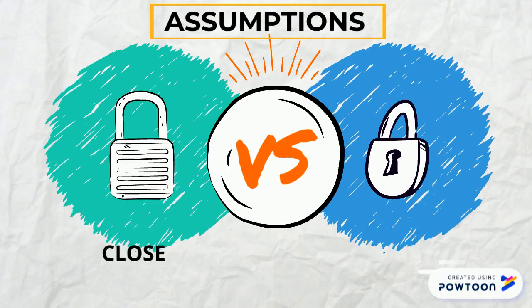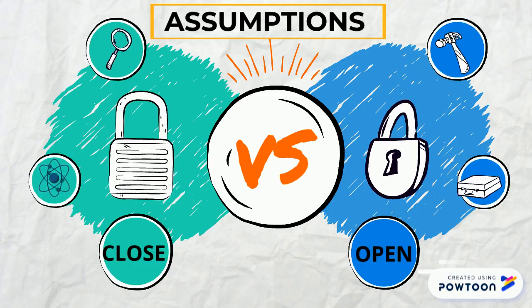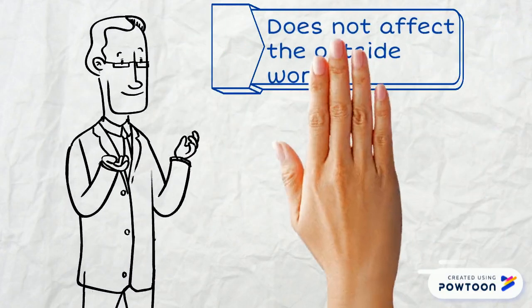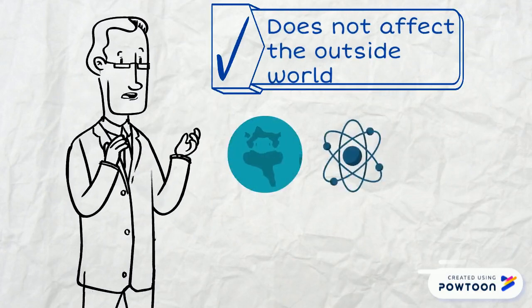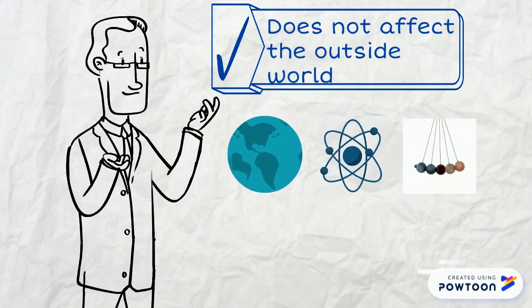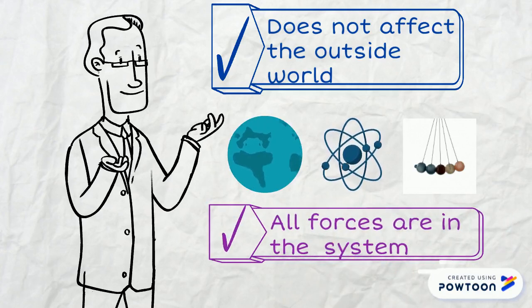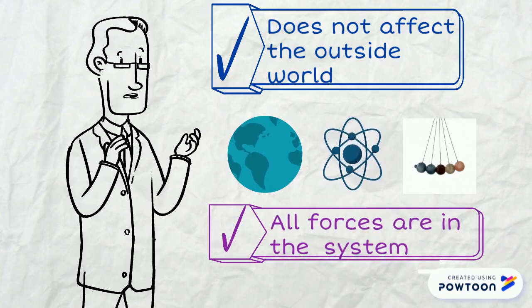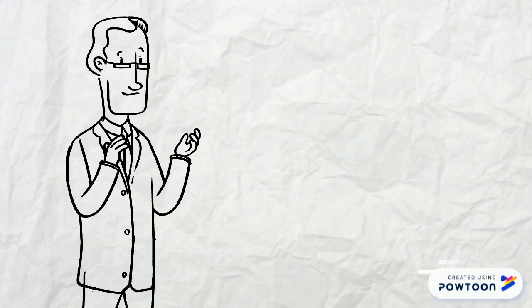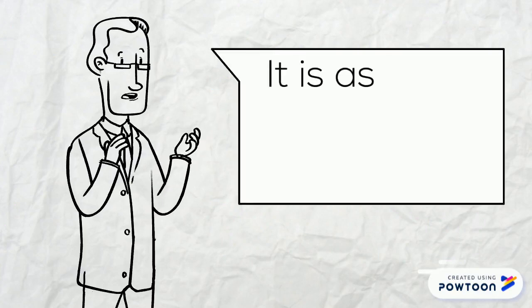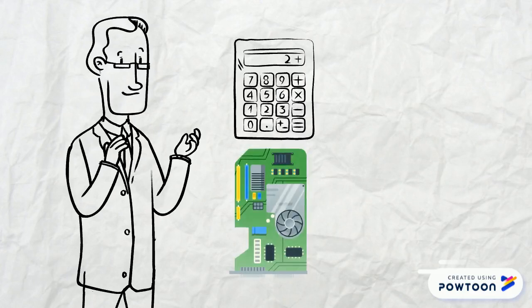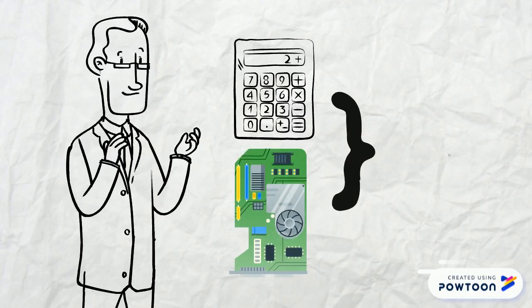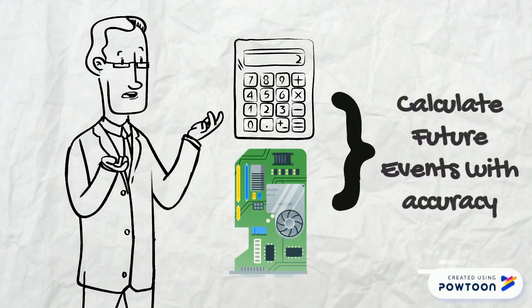Von Bertalanffy stated that all systems studied by physicists are closed; they do not interact with the outside world. When a physicist makes a model of the solar system, of an atom, or of a pendulum, he or she assumes that all masses, particles, forces that affect the system are included in the model. It is as if the rest of the universe does not exist and does not have any effects on the system itself. This makes it possible to calculate future states with perfect accuracy, since all necessary information is known.